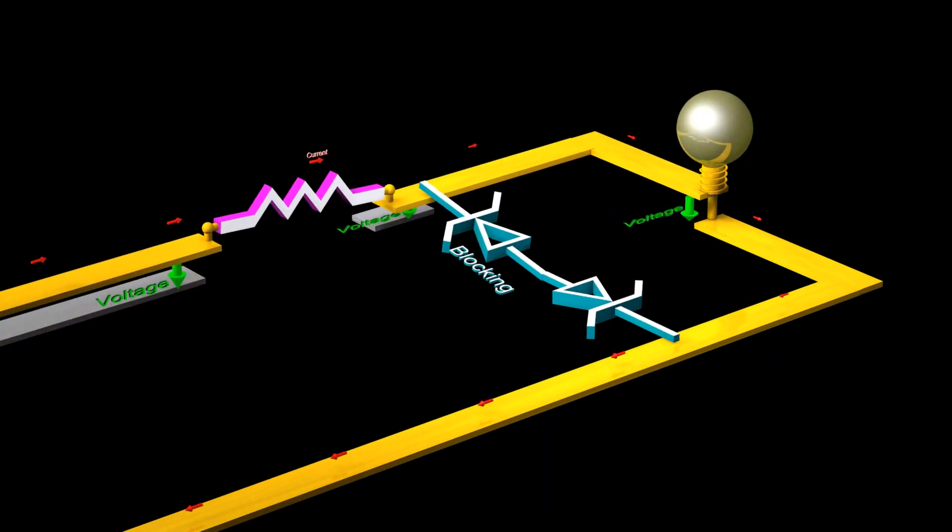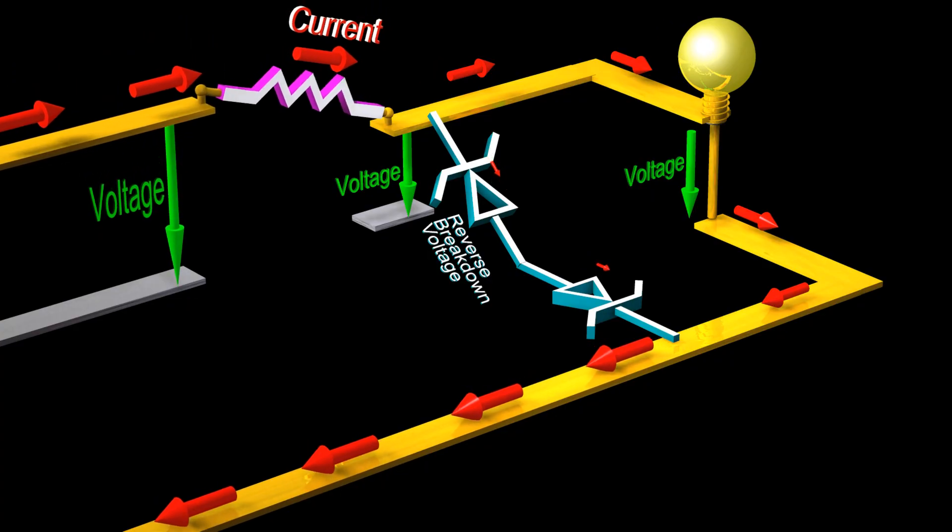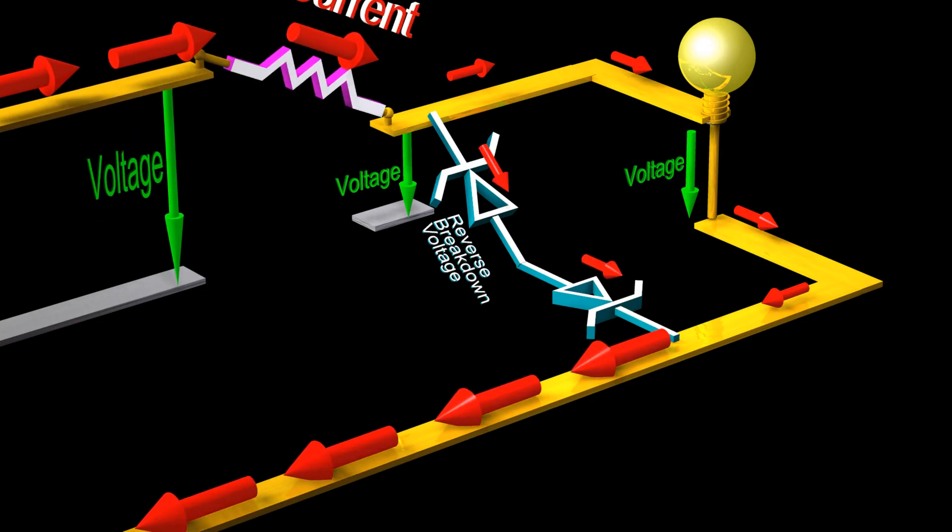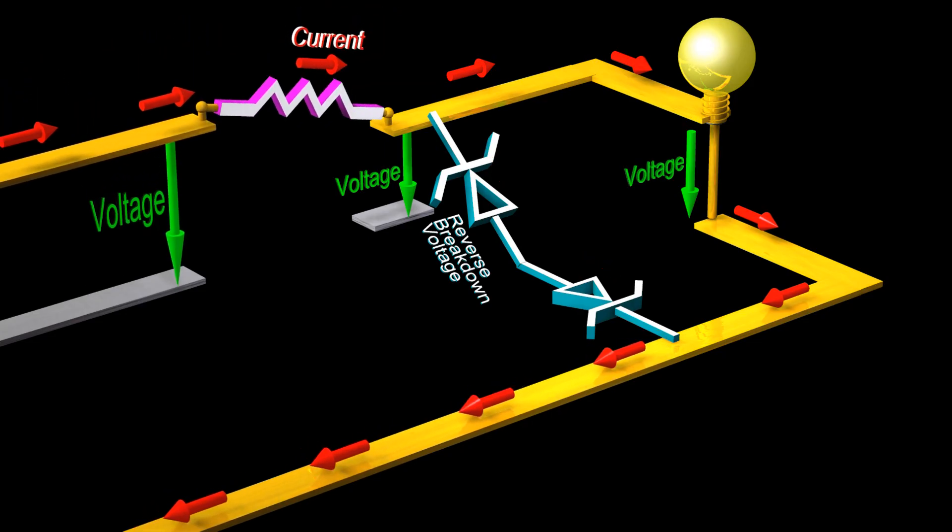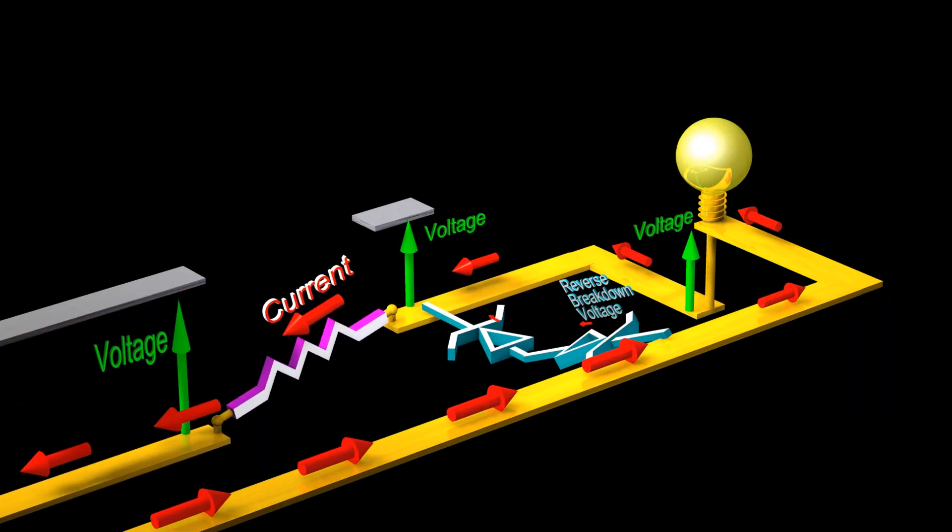When protecting against transient overvoltage conditions, we need special Zener diodes that are able to react very quickly and that are able to absorb a very large amount of energy for brief periods of time.